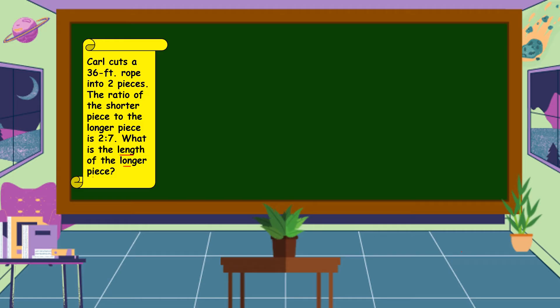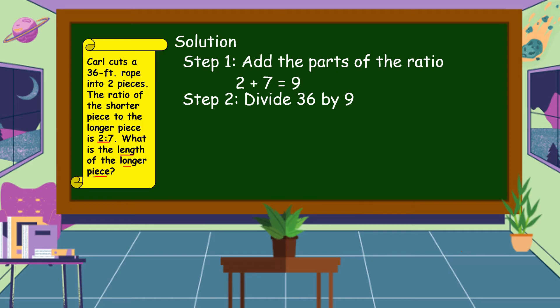So let's solve. Step 1: Add the parts of the ratio. Our ratio is 2 to 7, so 2 + 7 = 9. Step 2: Divide 36 feet by the sum of the ratio, which is 9.